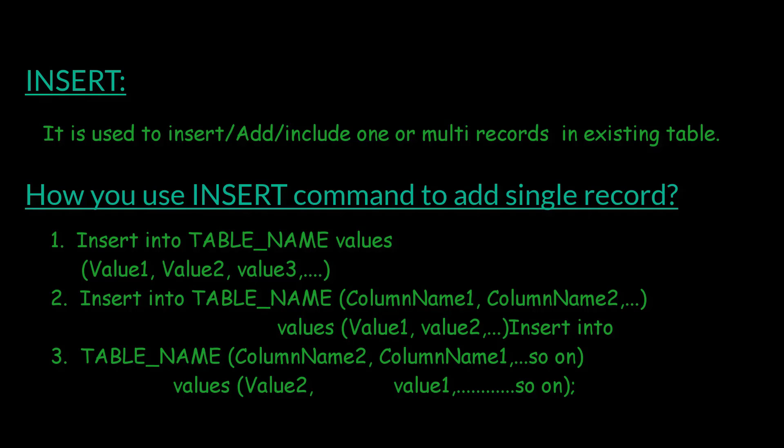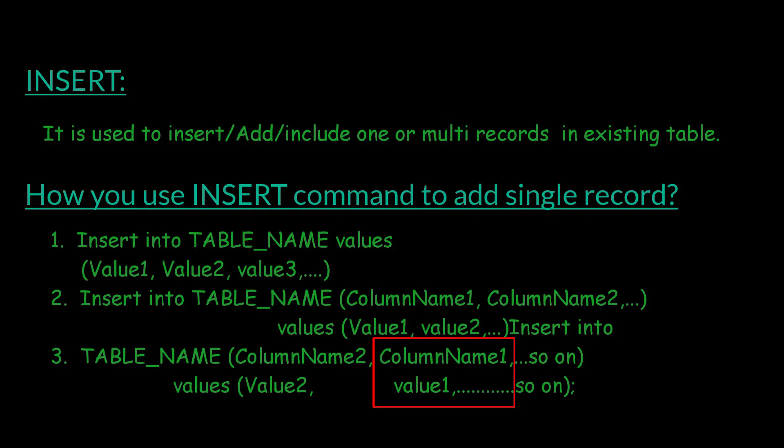A third way is to change the order of columns: INSERT INTO table_name (column_name2, column_name1, ...) — but the number of columns must equal the number of values, otherwise it gives an error. Here value2 is associated with column_name2 and value1 with column_name1.